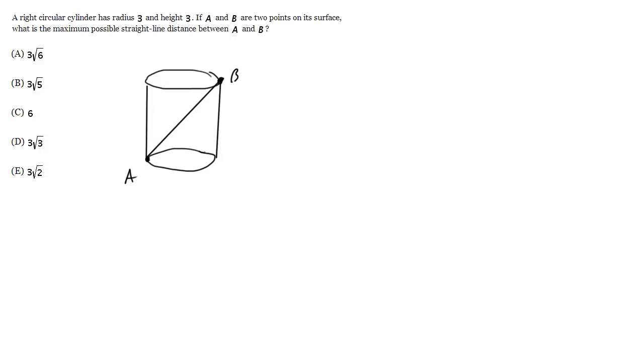Now how do I find that distance? Well, I know that the radius is 3, so it means the diameter of the circle is 6, and I know the height of this cylinder is 3.